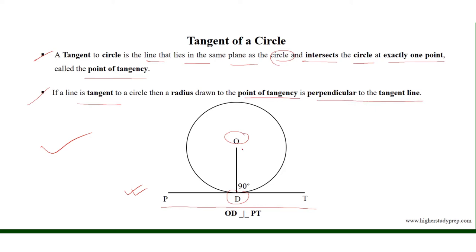Since O, D is the radius drawn to the point of tangency D, that is why O, D is perpendicular to Pt, and so angle O, D, P equals angle O, D, T, which is equal to 90 degrees.